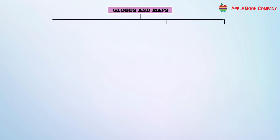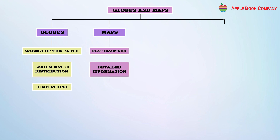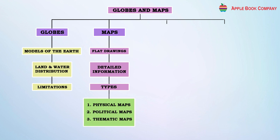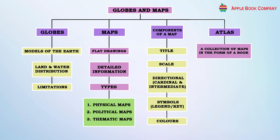Summary: Globes represent models of the earth showing land and water distribution, with limitations. Maps are flat drawings with detailed information, and there are three types: physical, political, and thematic. Components of a map include the title, scale, directions (cardinal and intermediate), symbols represented in the legend and key, and colors. An atlas is a collection of maps in book form.